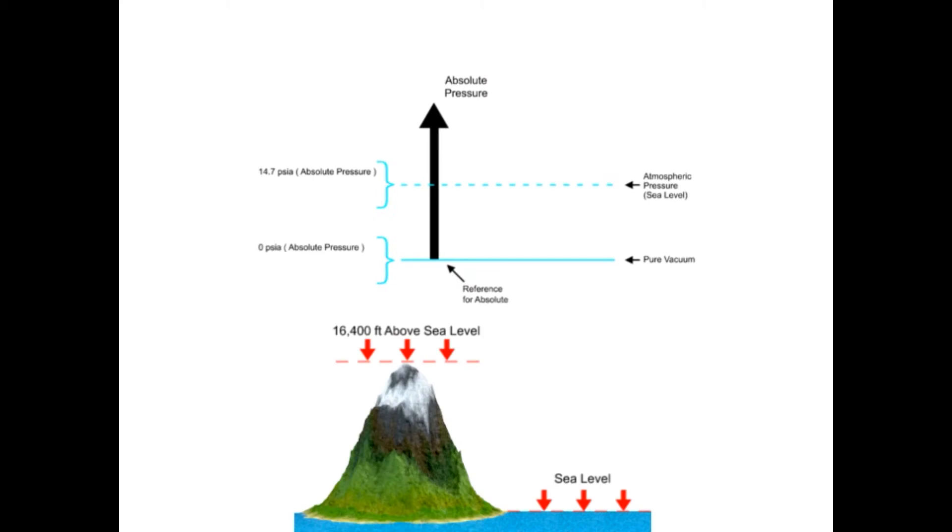Unit of measurement for absolute pressure is pounds per square inch absolute, abbreviated as PSIA. When the pressure sensing device is exposed to the atmosphere at sea level, the measurement scale will read 14.7 pounds per square inch.